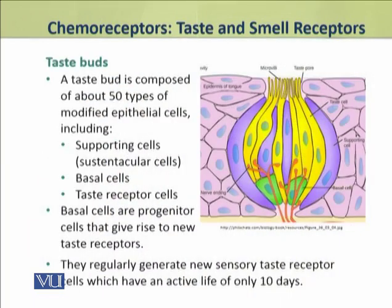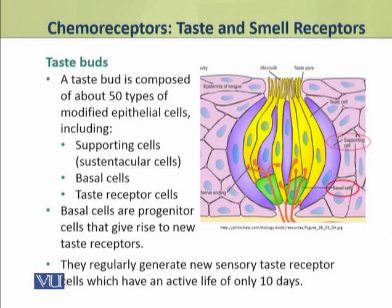We shall discuss the structure of a taste bud. A taste bud is composed of about 50 types of modified epithelial cells. The most important of these epithelial cells are called the supporting cells, also called sustentacular cells, basal cells, and taste receptor cells.